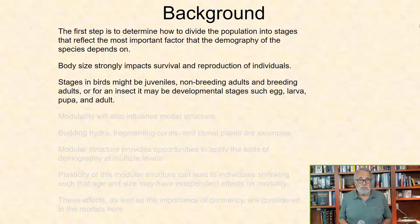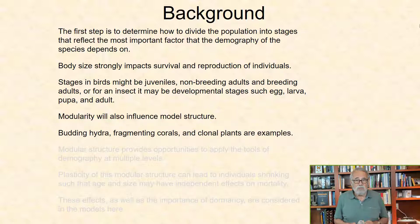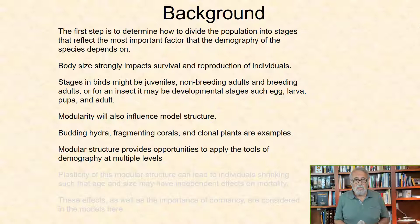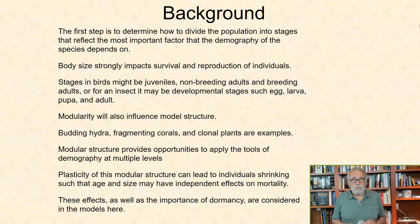The life cycle of a species, for example modularity, will influence a model structure. Budding hydra, fragmenting corals, and clonal plants are examples of species that can divide into modular, independent units. This modular structure provides opportunities to apply the tools of demography at multiple levels of organization, and the plasticity of this modular structure can lead to individuals shrinking, such that age and size may have independent effects on mortality. These effects, as well as the importance of dormancy, are considered in the models here.